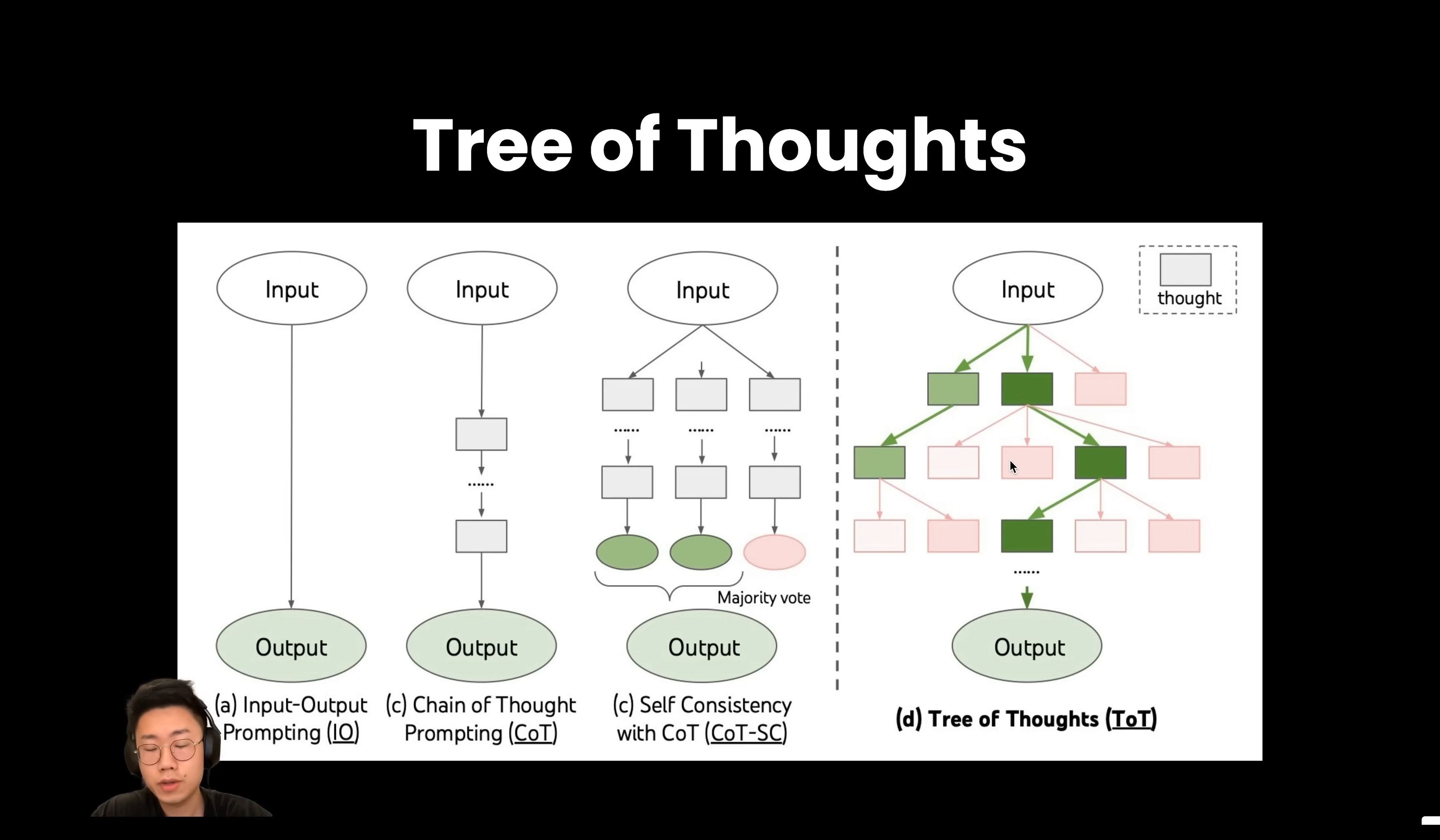The main problem of the tree of thought is that the implementation is quite complicated. You need to make multiple calls to large language models and also save the results somewhere to keep the state of the tree so that it can retrieve back.